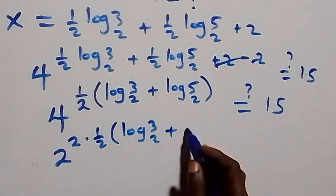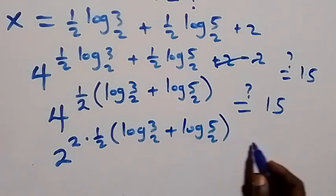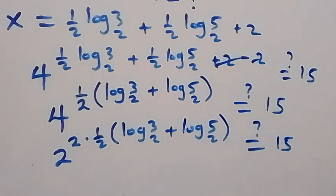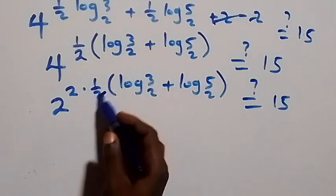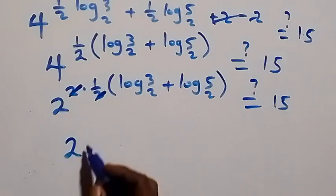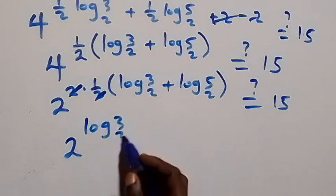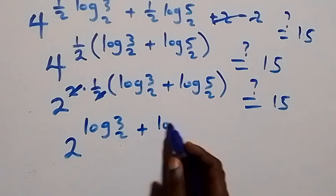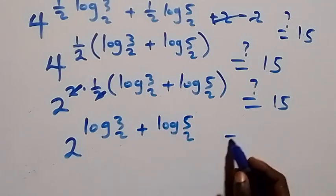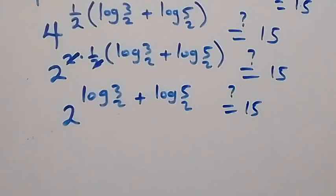Then from here, 4 can be written as 2 squared, then raised to power half times log 3 base 2 plus log 5 base 2. And is this equals to 15? Then 2 squared raised to power half gives 2 raised to power log 3 base 2 plus log 5 base 2. And is this equals to 15?